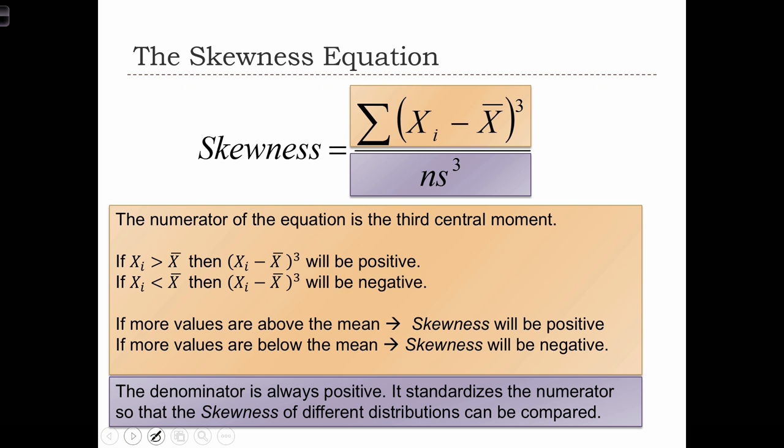And we're going to use the third central moment, the sum of the cubed deviations from the mean, to calculate the skewness equation. So here, the skewness statistic, which we're going to call sk so that we don't confuse it with the standard deviation.